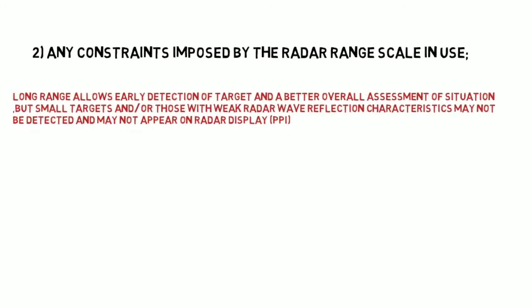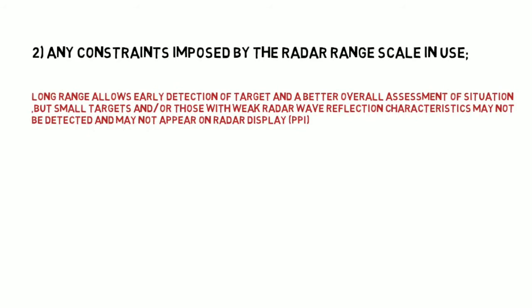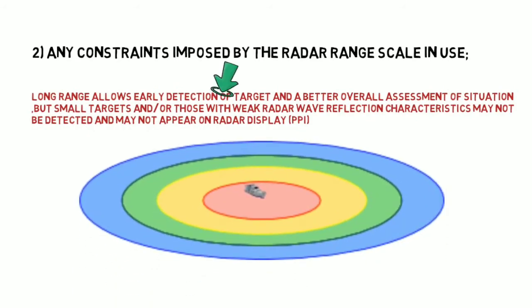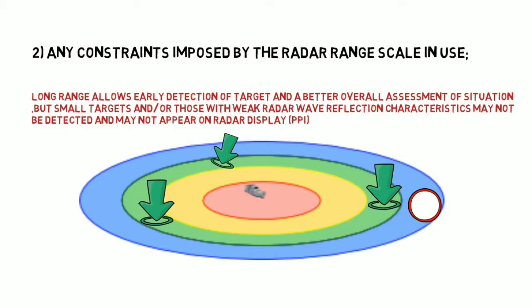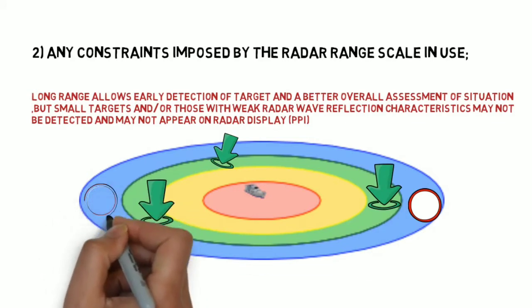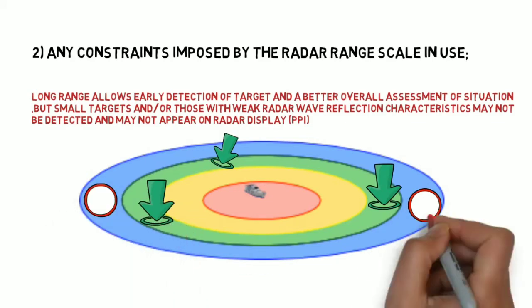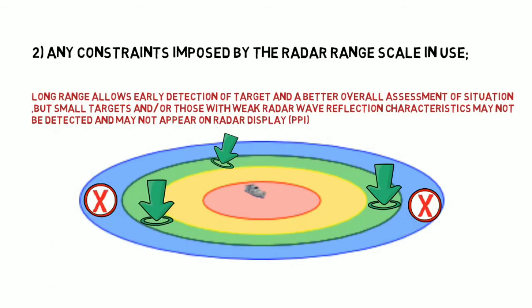Point 2: Any constraint imposed by the radar range scale in use. The long range allows early detection of the target and a better overall assessment of the situation. But small targets or those with weak radar wave reflecting characteristics may not be detected and may not appear on the radar display.